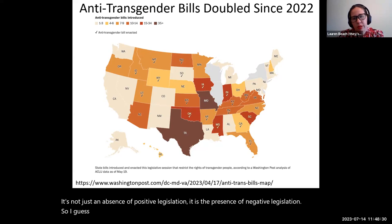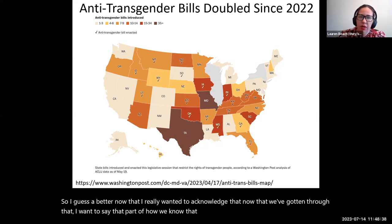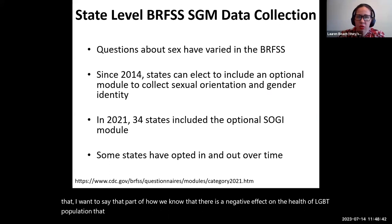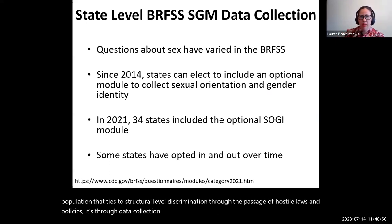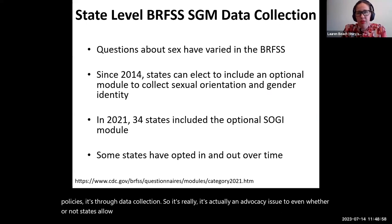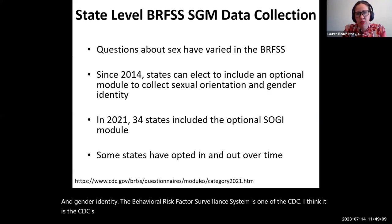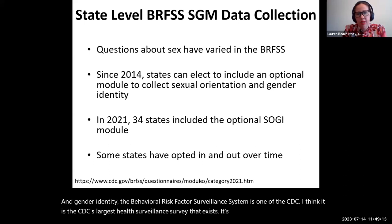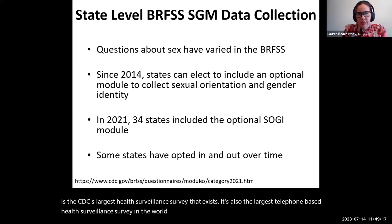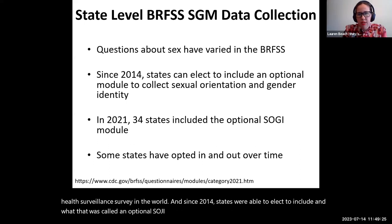Part of how we know there is a negative effect on the health of LGBT populations tied to structural-level discrimination through hostile laws and policies is through data collection. It's actually an advocacy issue whether or not states allow data collection that would include sexual orientation, sex assigned at birth, and gender identity. The Behavioral Risk Factor Surveillance System, or BRFSS, is the CDC's largest health surveillance survey — also the largest telephone-based health surveillance survey in the world. Since 2014, states were able to elect to include what was called an optional SOGI module in their BRFSS.